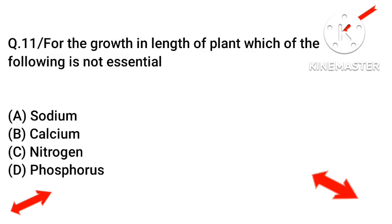Question number eleven: for the growth in length of a plant, which of the following is not essential? Options are option A sodium, option B calcium, option C nitrogen, and option D phosphorus. The right answer will be sodium, option number A.